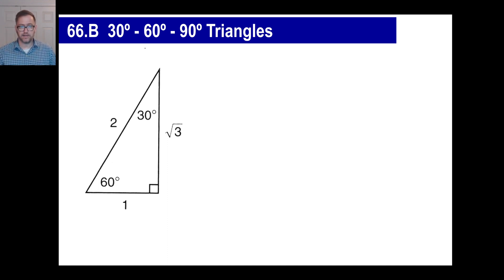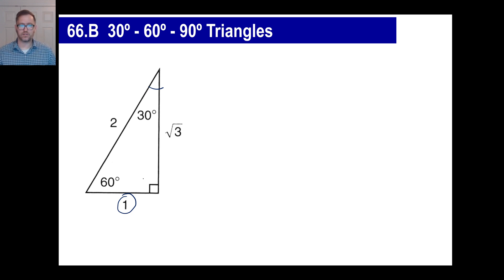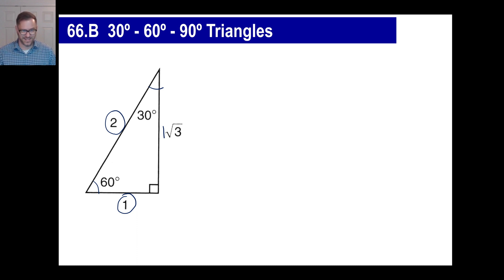Here's the 30-60-90 triangle in a nutshell. If you have a triangle with a 30-degree angle, a 60-degree angle, and a 90-degree angle: the side across from the 30-degree angle has value 1. The side across from the 90-degree angle — you might think it's three times the 1, but it's only twice: it's 2. The side across from the 60-degree angle is 1 times the square root of 3. A lot of kids just memorize 1, 2, square root of 3.